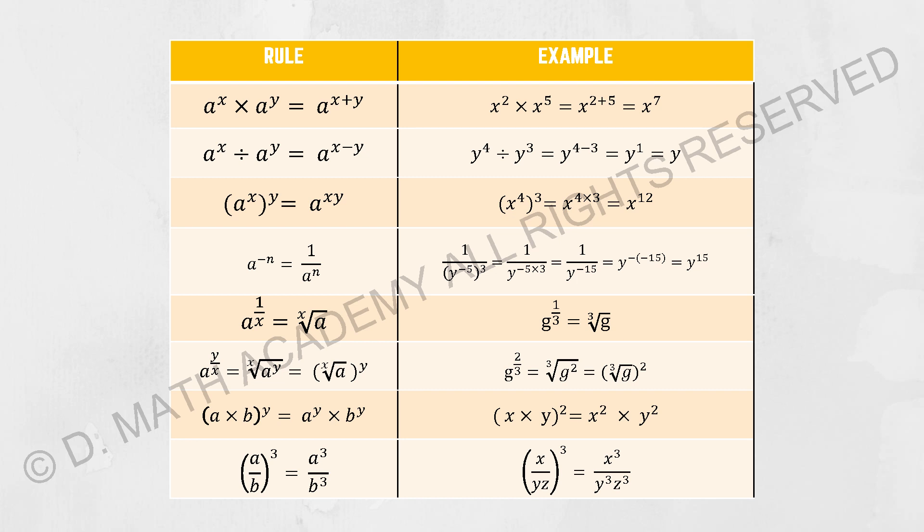Lastly, a over b to the power of 3 becomes a to the power of 3 over b to the power of 3.